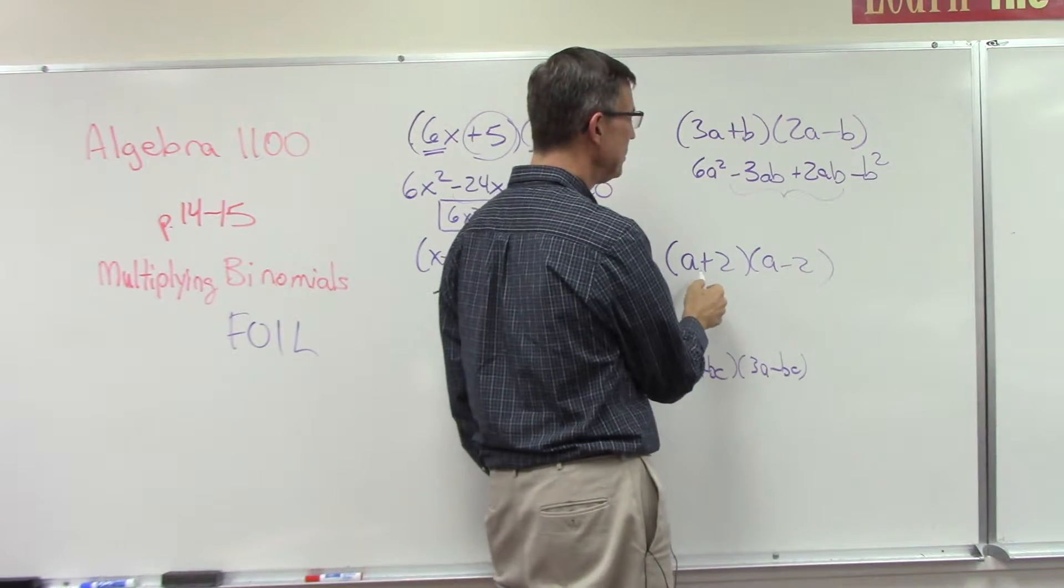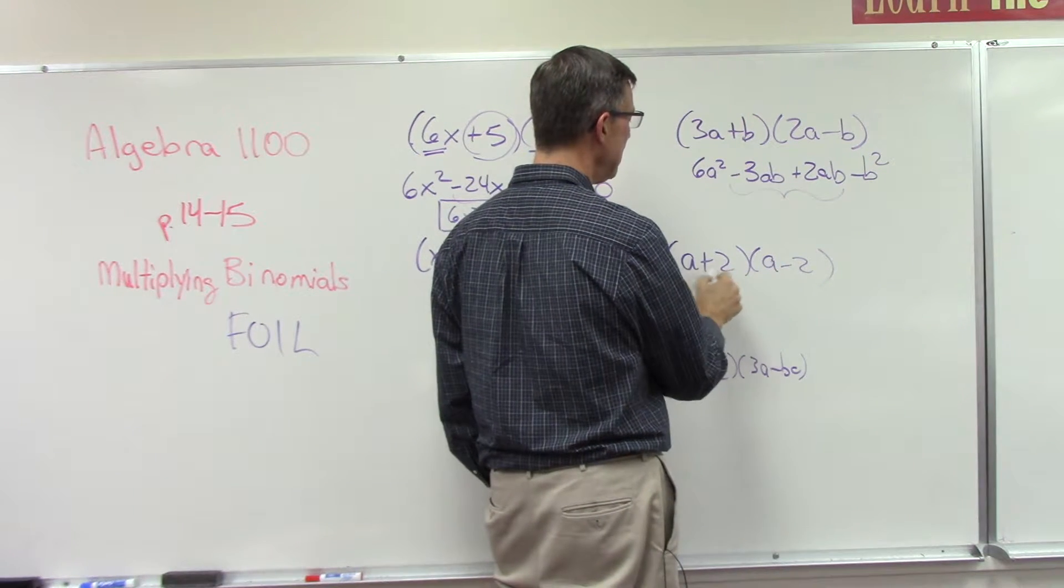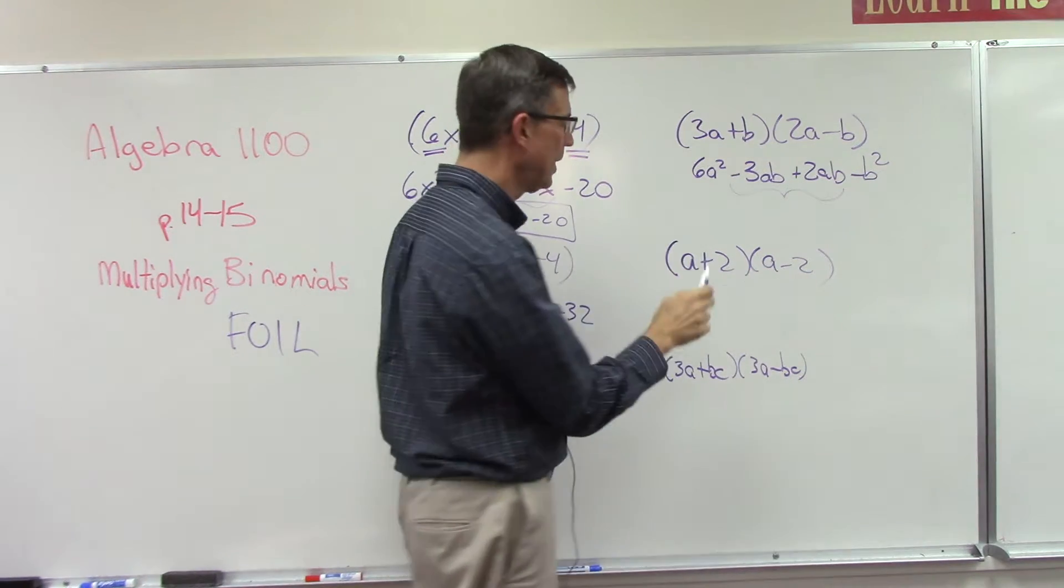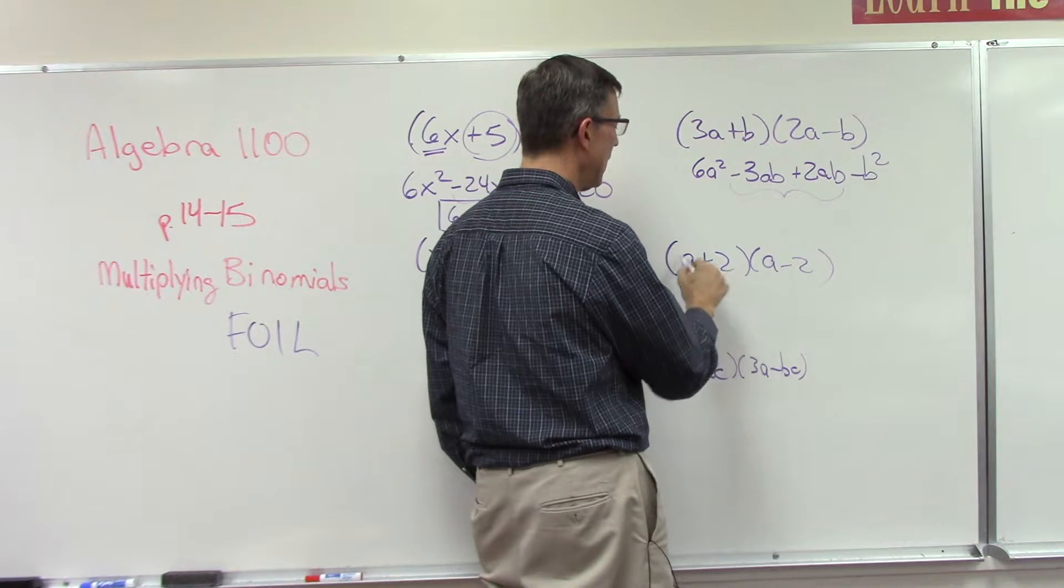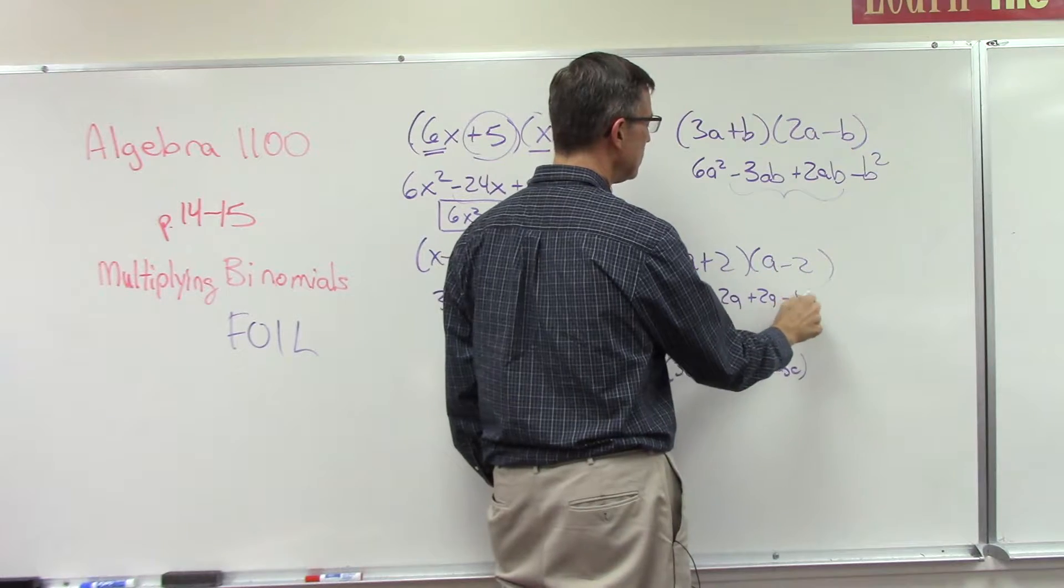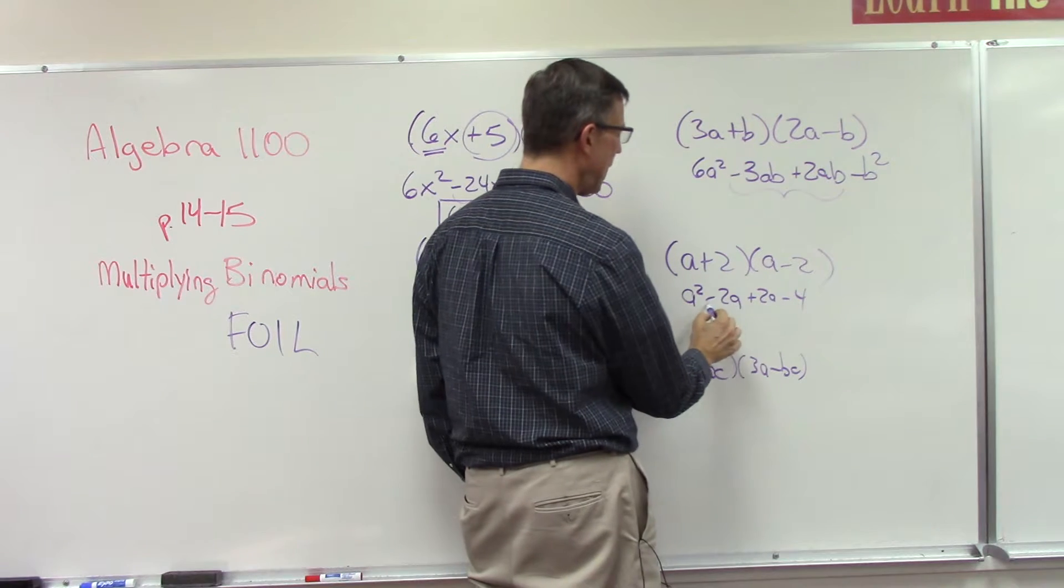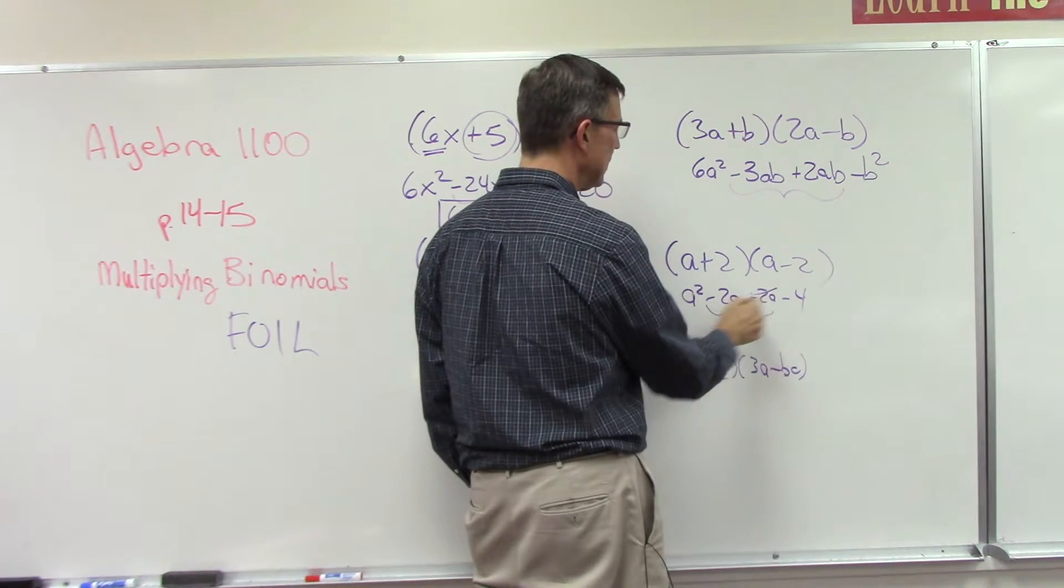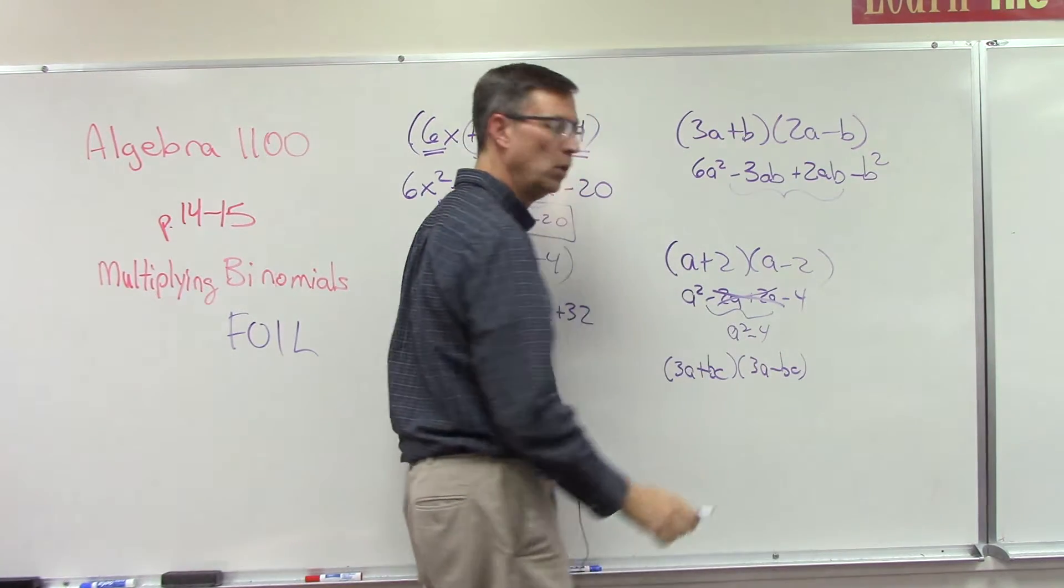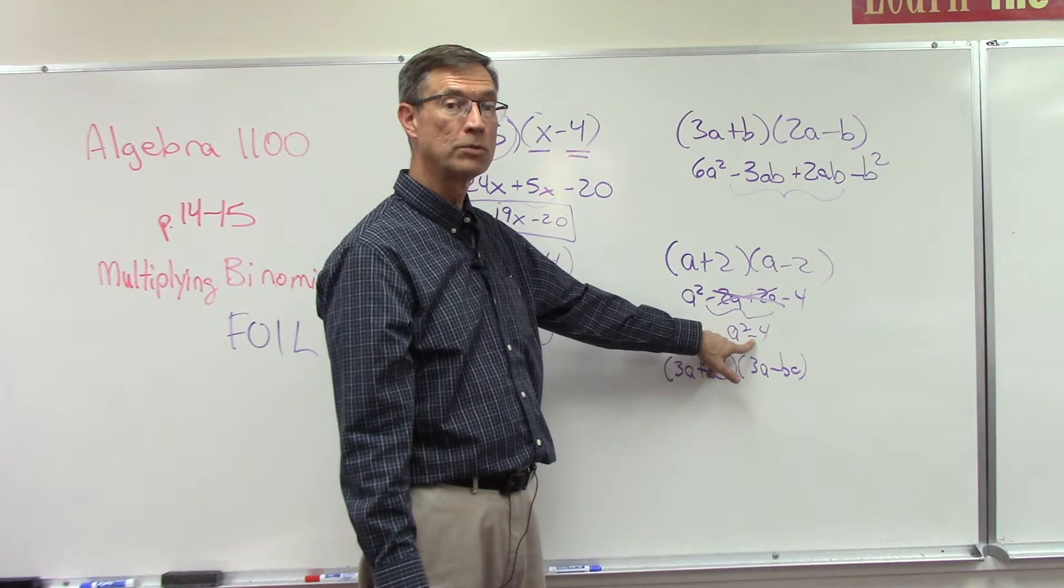I want you to know something special with this one. We have the same letter in the front, we have the same number at the back, and it's just the sign is different. Look what happens: first, a squared; outer, negative 2a; the middle term is positive 2a; the last term is negative 4. But what happens when you add these two together? They cancel out and we end up with just a squared minus 4. Isn't that cool? So we call this the difference, remember difference is the answer to subtraction, the difference of perfect squares, because a squared is a to the second power, a square, it's a perfect square, so is 4, 2 squared.